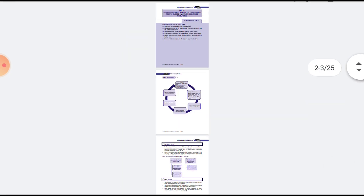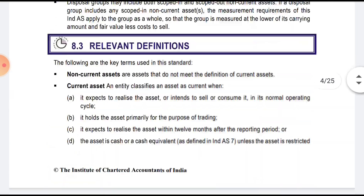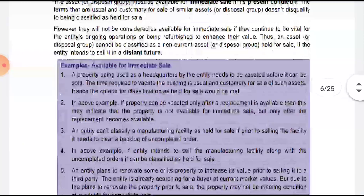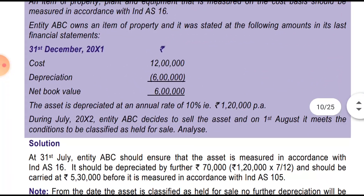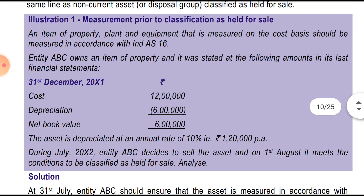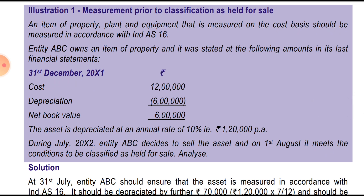First we'll discuss Illustration 1: Measurement prior to the classification as held for sale. So what would be the measurement prior to the classification as held for sale? We have to bring it to the cost after deducting entire depreciation till the date of classification. An item of property, plant and equipment measured at cost basis should be measured in accordance with IND AS 16.